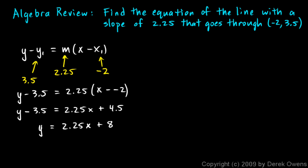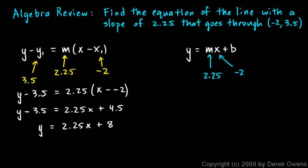There's another approach we could take. Using y equals mx plus b — the slope-intercept form — if we can find m and b, we're done. We know m is 2.25, so we plug in 2.25 for m, negative 2 for x, and 3.5 for y to solve for b. This gives us the same answer; I'm just showing a different way to do it.